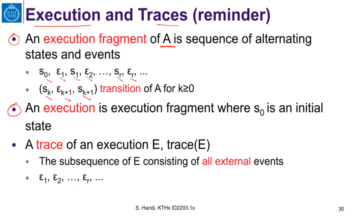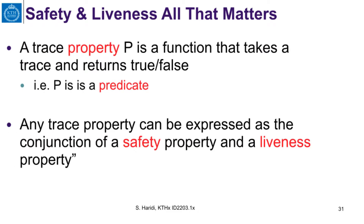An execution is an execution fragment where the initial state of that execution is part of the set of initial states of the whole system. A trace is basically the projection of an execution consisting only of all external events that we want to observe. When describing a system, a problem, or an algorithm, we describe it in terms of safety and liveness properties — these are properties on traces, where the property is either satisfied or violated for a given trace.